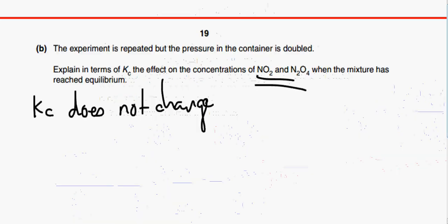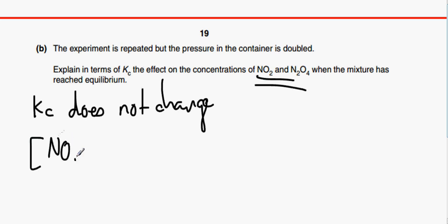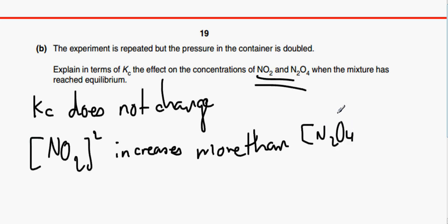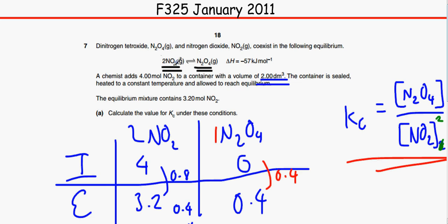So the way we would write that is that the concentration of NO2 increases more than N2O4. Because if you think about it, we've got two moles here. We have got double the amount of moles on this side than on this side. So if we decrease the space in which they are in, the concentration is obviously going to be far more over here on the left than it is on the right.